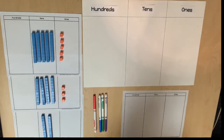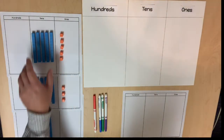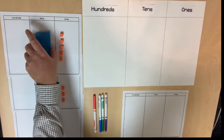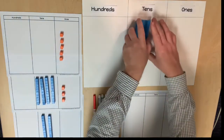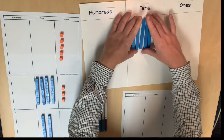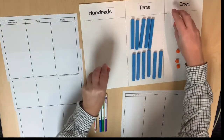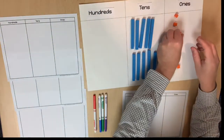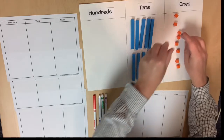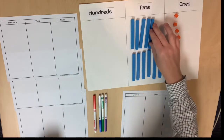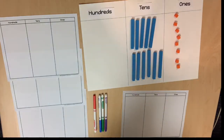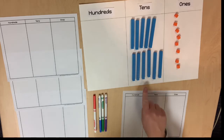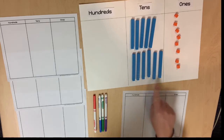Using a place value chart with the hundreds place, place all the base ten blocks on the place value chart. Determine the number of tens and ones represented on the place value chart. Here we have eleven tens and eight ones.